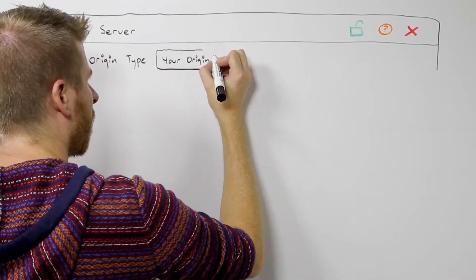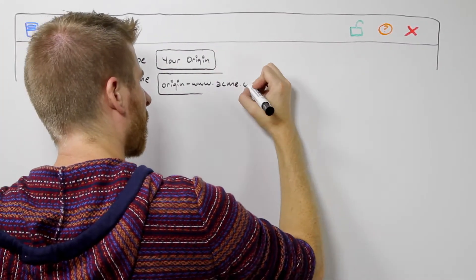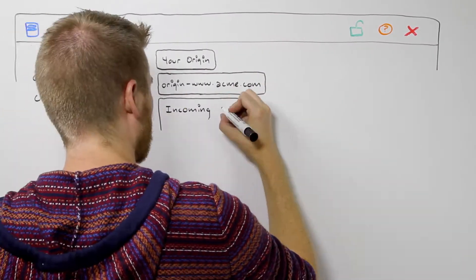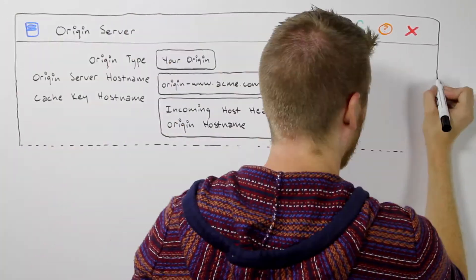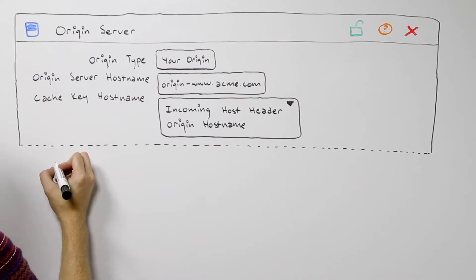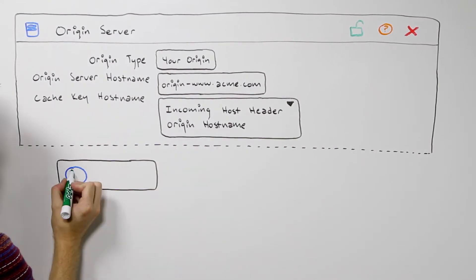The origin behavior is your primary location where you set the cache key. You can select either origin hostname or incoming host header. Two examples can illustrate why you would choose one versus the other.